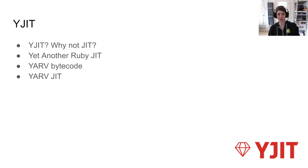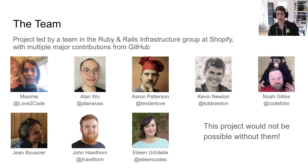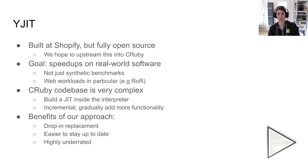So why JIT, why not JIT — the name stands for Yet Another Ruby JIT, or YARF JIT, because it compiles YARF bytecode into machine code. This project is not just my project; it's a team project by a team at Shopify in the Ruby and Rails infrastructure group, with multiple major contributions from GitHub.